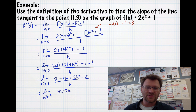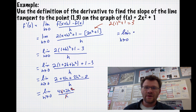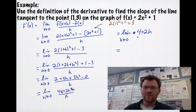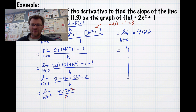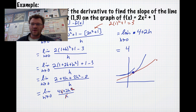The 2 and negative 2 cancel, leaving 4h plus 2h squared all divided by h. We can factor out h from the numerator, canceling with the denominator h, leaving the limit as h approaches 0 of 4 plus 2h. As h approaches 0, this approaches 4. That means on the parabola 2x squared plus 1, at the point (1, 3), the slope of the tangent line right at that point is 4. That is the definition of the derivative.